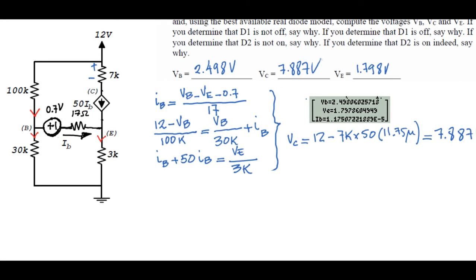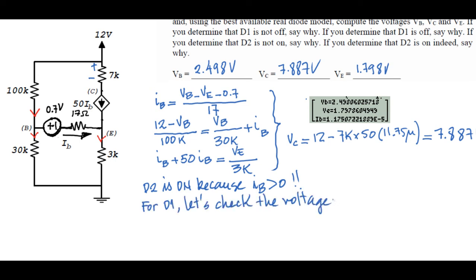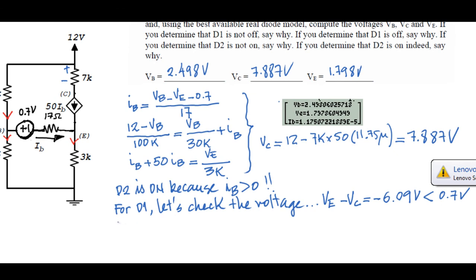Now let's test to see if this diode is really on. The ON test for a diode is a current test. D2 is ON because its current is positive — it is flowing from anode to cathode. To check the voltage to see if a diode is ON is wrong, as was said in class. For D1, we check its voltage, and the voltage across D1 is negative 6 volts, which is less than 0.7 volts. That is the reason why D1 is OFF — its voltage is less than 0.7 volts.